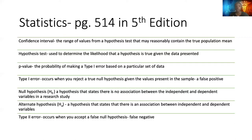The first term you want to be aware of is called the null hypothesis. The null hypothesis is going to be the belief that there is no association between the independent and dependent variables in a research study — the same thing as the status quo. The alternate hypothesis is where there is an association between the independent and dependent variables, meaning what the status quo believes actually relates to this new idea.